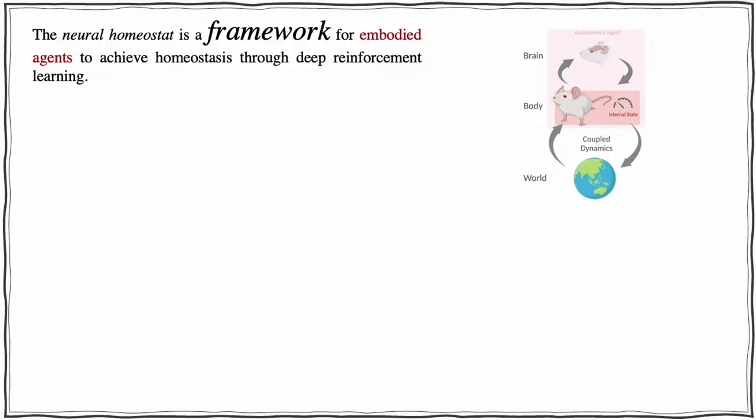The neural homeostat is a framework for embodied agents to achieve homeostasis through deep reinforcement learning. To do so, the agent receives the following inputs.